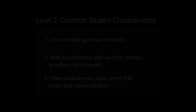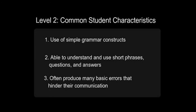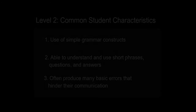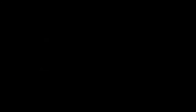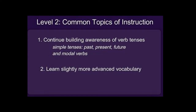Level two would be what CSU calls beginner and TESOL calls emerging. At this level they're using some vocabulary and grammar, but very simple. They're able to understand short phrases and questions and give short answers. They're still producing a lot of basic and systematic errors, and their communication is highly hindered by these errors. At this beginner level you're going to be teaching the simple tenses — past, present, and future — as well as modal verbs and a slightly higher level of vocabulary.